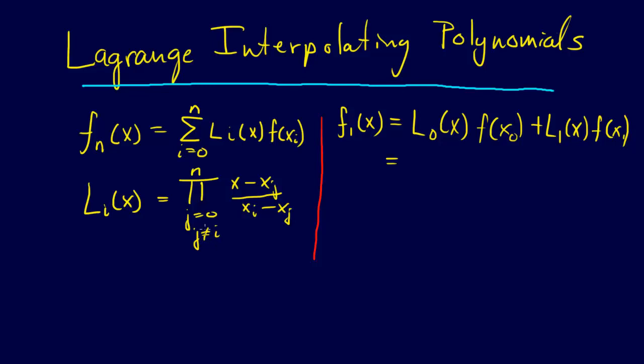So now we can go ahead and increment our j up to 1. j equals 1, and j is not equal to i. We can check that because i is equal to 0 and our j is equal to 1 now. That's good. And then we're going to have x minus xj, so that will be x minus x1 divided by xi minus xj. And i is 0, so x0 minus x1. And then that's just going to be multiplied by f of x0.